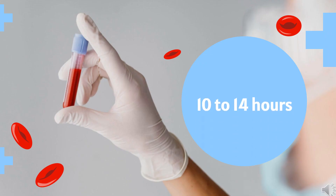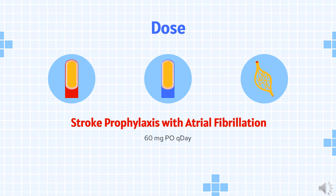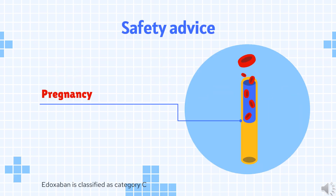Half-life: The terminal elimination half-life of Edoxaban following oral administration is 10–14 hours. Dosing — Stroke prophylaxis with atrial fibrillation: 60 mg PO once daily to reduce risk of stroke and systemic embolism associated with NVAF. DVT or PE treatment: For patients greater than 60 kg, 60 mg PO once daily; for patients less than or equal to 60 kg, 30 mg PO once daily, following initial parenteral anticoagulant therapy for 5–10 days.